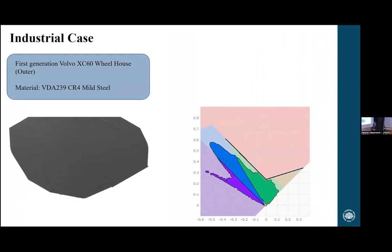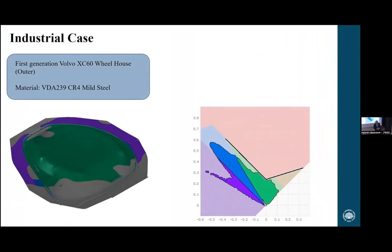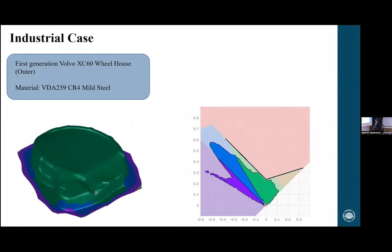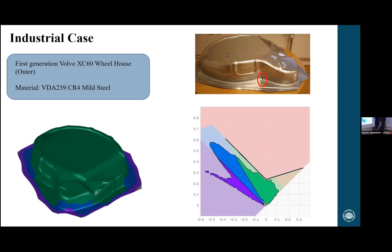Jumping into non-linear strain paths. For this study, I used an industrial component: a first generation Volvo XC60 wheelhouse manufactured from a CR4 mild steel. Based on the forming limit diagram, this should theoretically be safe — no points above the curve. But when we try to manufacture it, what we see is not only a neck, but actually a full-blown fracture. Looking into what happens, we can examine the strain path at the crack origin, and find that the strain path is highly non-linear — with a 19-degree turn in the strain path that is suspected to cause the trouble.